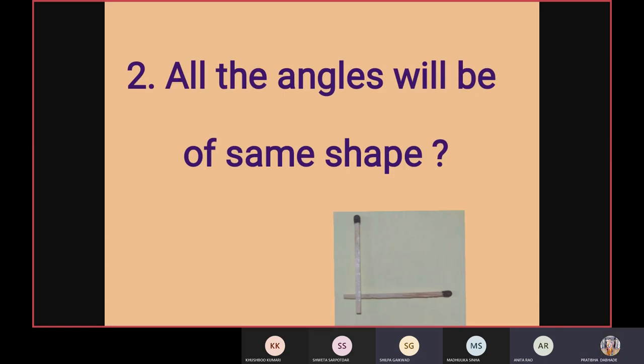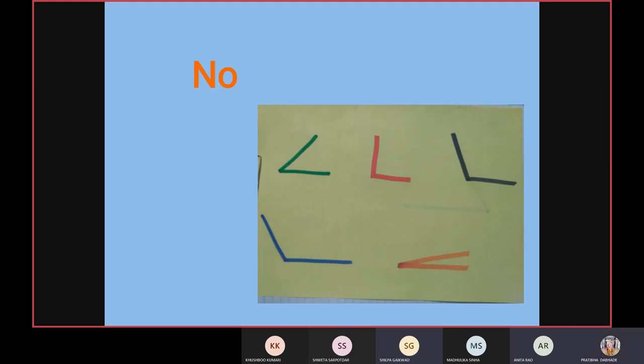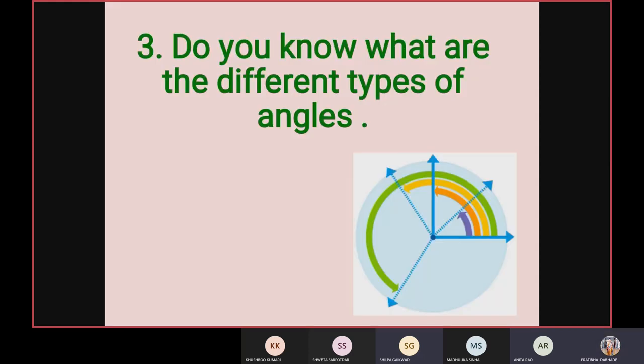Now can you tell me, will all the angles be of the same shape? No. Yes, very good, right. All the angles will not be of the same shape as you can see in this picture. Now tell me how many types of angles are there? Four, five. Four or five. Okay, can you name them please?